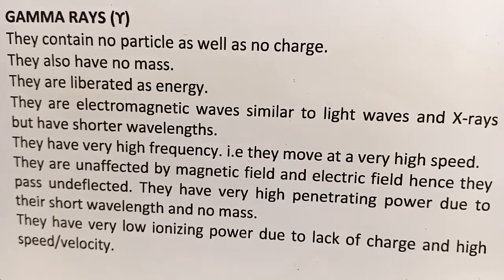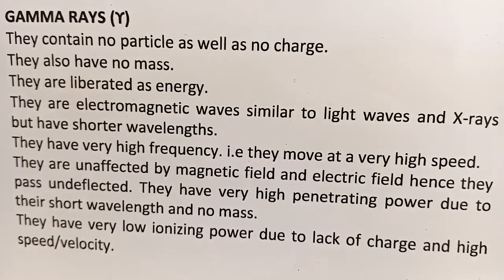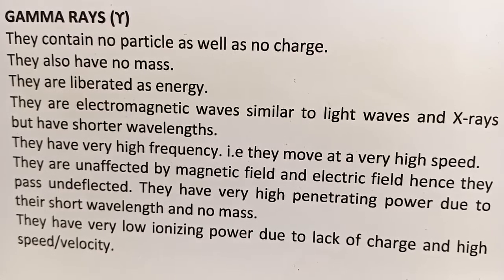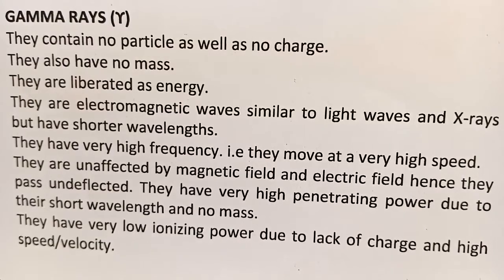The low ionization power of gamma rays is due to their lack of charge and high velocity. Having no charge means their ability to charge other particles is zero, and since they move very fast, in a nuclear equation they are simply represented as energy.